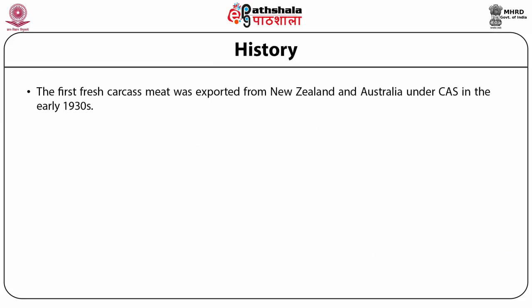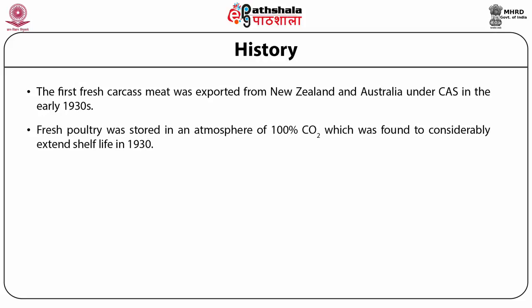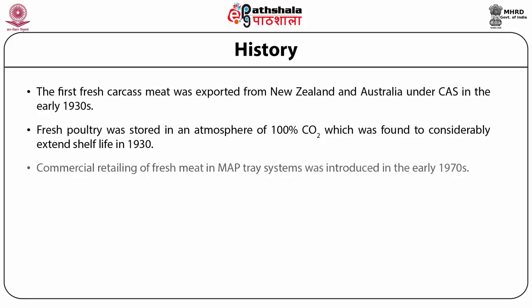The first fresh carcass meat was exported from New Zealand and Australia under gas in the early 1930s. Early developments were generally for storage and transportation of bulk foods. Scientific investigations on the effect of gases on extending the shelf life of foods were conducted in 1930 on fresh meat and poultry. Fresh poultry was stored in an atmosphere of 100% carbon dioxide, which was found to considerably extend shelf life. Commercial retailing of fresh meat in MAP tray systems was introduced in the early 1970s.